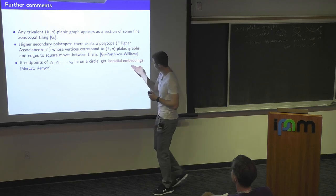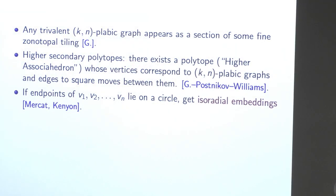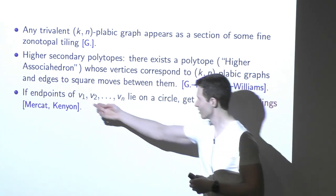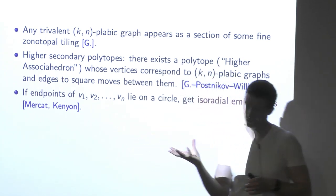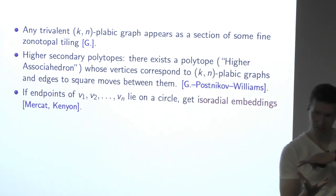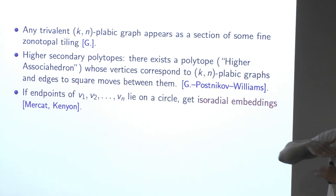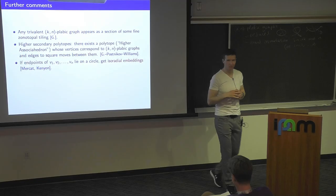Some of you may care about isoradial embeddings. If you take the vectors to lie on a circle, then you get an isoradially embedded plebik graph at each level. So isoradial graphs come in packs of compatible ones at different levels, and you can relate the edge weights nicely.